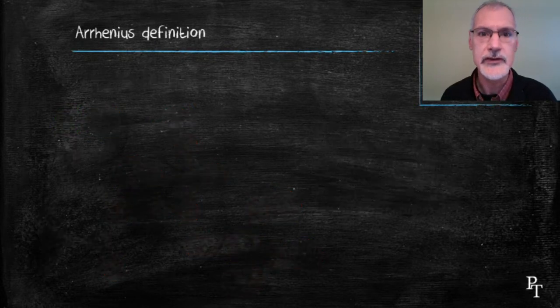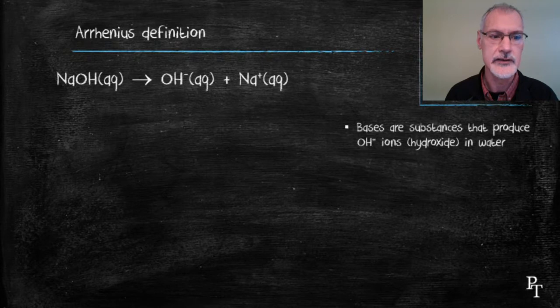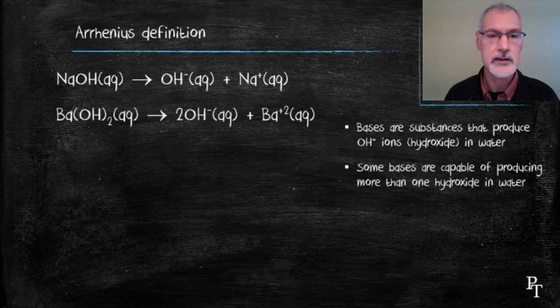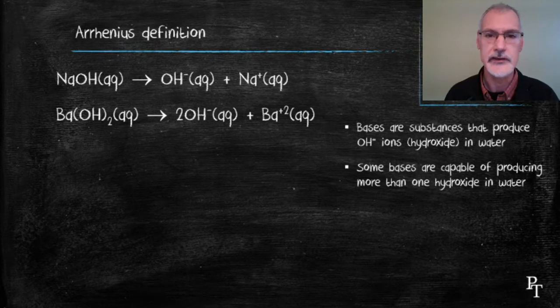Arrhenius defined bases as substances that produced hydroxide ions in water. So, for instance, sodium hydroxide would dissociate or break apart into hydroxide ions and sodium ions. Similarly, there are some bases that are capable of producing two hydroxide ions.